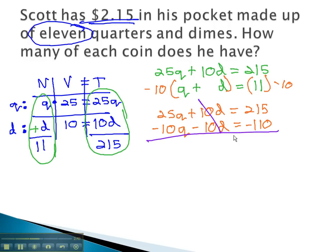Adding those equations together, the dimes will subtract out, giving us 15q equals 105. Dividing both sides by 15, and we'll find out that q is equal to 7.